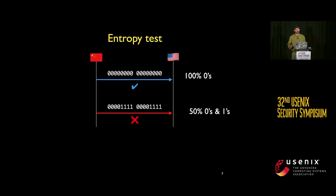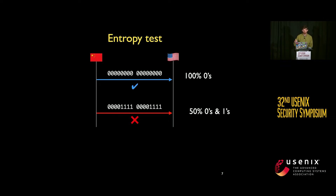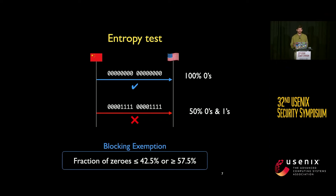This leads to our first finding: a crude entropy test being deployed by the censor. If approximately half of the bits in the connection are set to 0 and half to 1, the traffic would not be exempt from blocking and would likely get blocked if no other rules were met. As we varied the payload, we found a loose threshold around 50% — as long as you were within that threshold, the traffic would experience blocking.